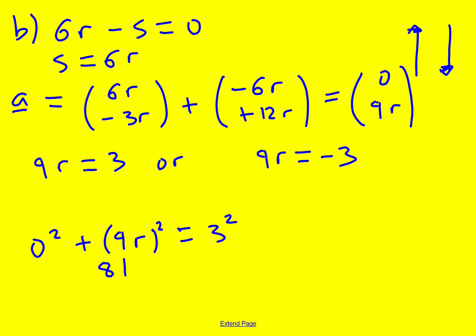That gives us 81r² = 9, so r² = 1/9. And r is plus or minus 1/3 by taking the square root.